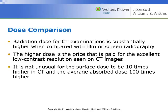CT dose is a lot higher than x-ray. The federal government compares CT to a chest x-ray: a chest x-ray is like a round-trip flight to Paris in terms of natural background radiation equivalent, while a chest CT is like 100 flights to Paris — roughly 100 times the dose. That higher dose is basically the price paid for the excellent image quality.